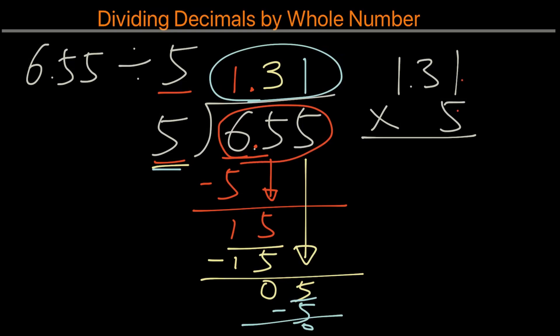So we take 5 times 1 is 5, 5 times 3 is 15, 5 times 1 plus 1 is 6. And so we can see that this number matches this number here. And that tells us that the answer of 1.31 here is correct.